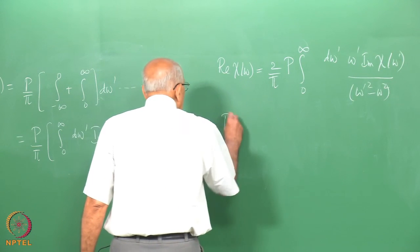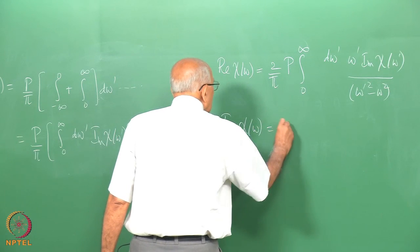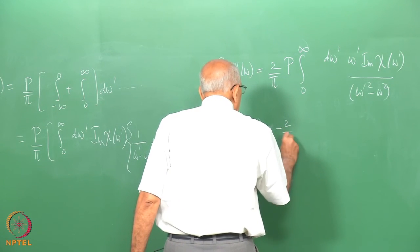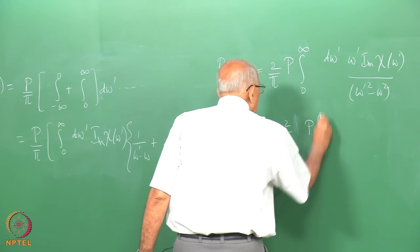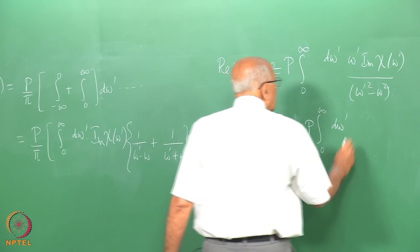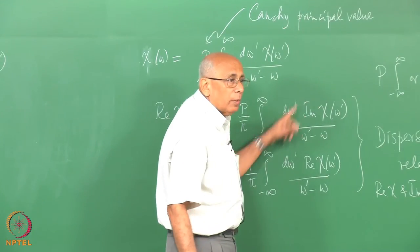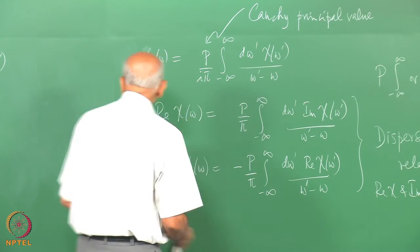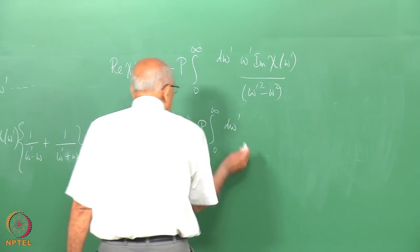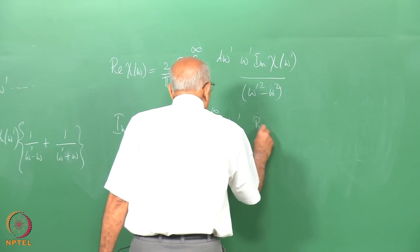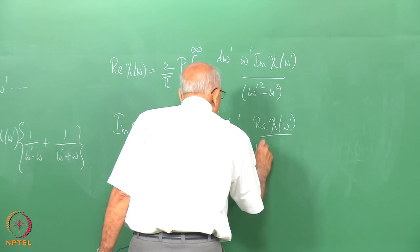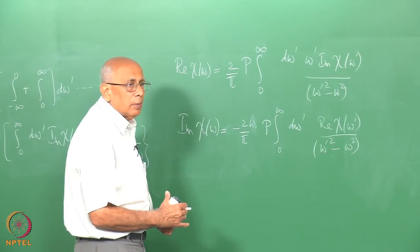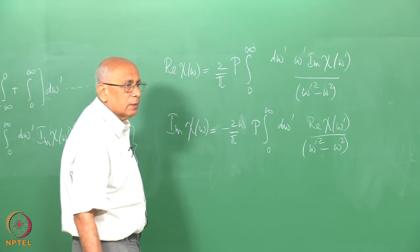Similarly for the imaginary part: imaginary chi(omega) equals minus 2 over pi times the principal value from zero to infinity of d omega prime times omega times the real part of chi(omega prime), divided by omega prime squared minus omega squared. When you subtract the two terms you get 2 omega, which sits outside the integral, and then the real part of chi(omega prime). That is a very useful form of the dispersion relation, the one you would use in practice.